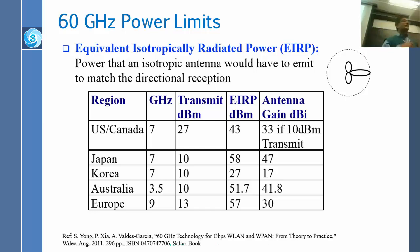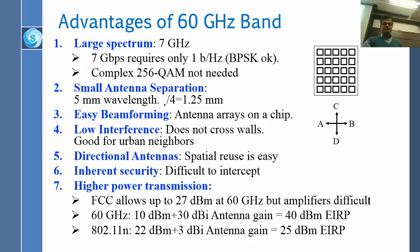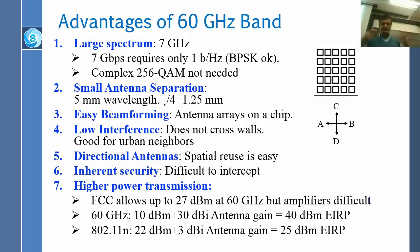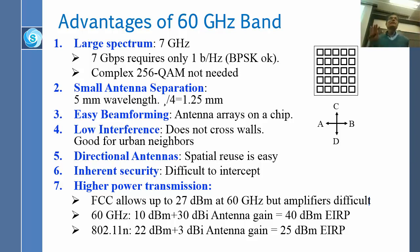Because the antennas are so small, you can put lots of them on a chip. The advantages of 60 GHz: first, the spectrum is large — you have a 7 GHz band in the United States. With that much bandwidth, all you need is simple BPSK at one bit per hertz. Second, small antenna separation — with a 5 mm wavelength, lambda-over-4 is 1.25 mm, so you can put many antennas on a single chip.